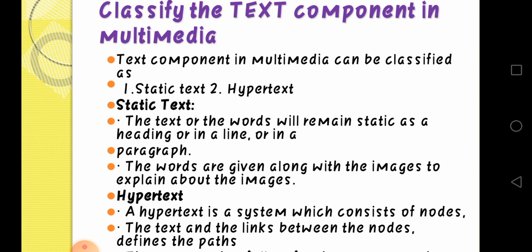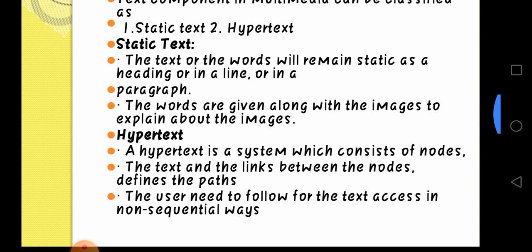The words are given along with the images to explain about the images. Hypertext is a system which consists of nodes. The text and links between the nodes define the path the user needs to follow. The text is accessed in non-sequential ways, so you can just link and choose the text or image you want.